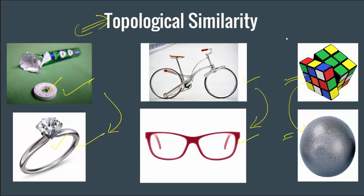These two are similar and these two are also similar since they have zero holes. Here you have zero, here you have two, and here you have one — so it is increasing in steps. It is an inherent property of these objects. You cannot imagine a spectacle without its holes, you cannot imagine a ring without its hole.